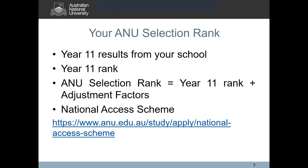Your ANU selection rank then consists of your year 11 rank plus any adjustment factors that you are eligible for. Under the national access scheme, ANU awards equity, subject, or performer adjustment factors, and these will be added to your year 11 rank to arrive at your ANU selection rank.